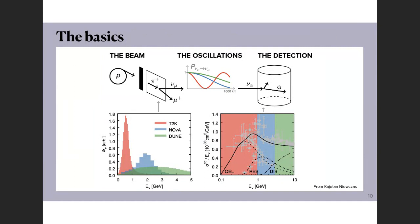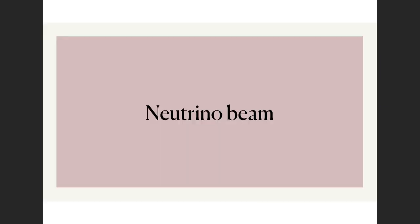In this cartoon from Kajita, neutrinos from accelerators are shown in the basic setup needed to observe oscillations: you need the beam, you need to know the fluxes and energy spectrum of the produced neutrinos, you need to let the neutrinos oscillate, and then you need to detect them. Detection implies knowing the interactions, the detector efficiencies — all very important in order to extract the information on oscillations.